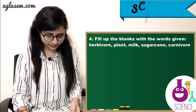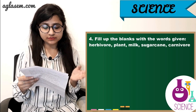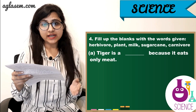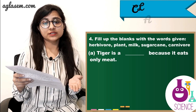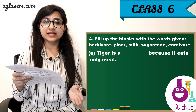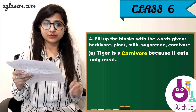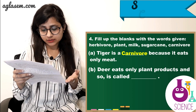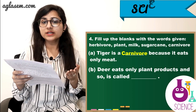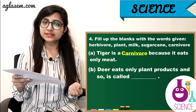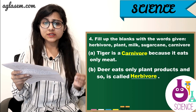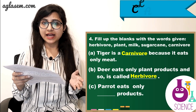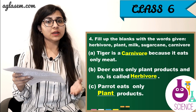Question number 4: Fill up the blanks with the words given. A. Tiger is a ______ because it eats only meat. The answer is carnivore. B. Deer eats only plant products and so it is called ______. The answer is herbivore. C. Parrot eats only ______ products. The answer is plant.